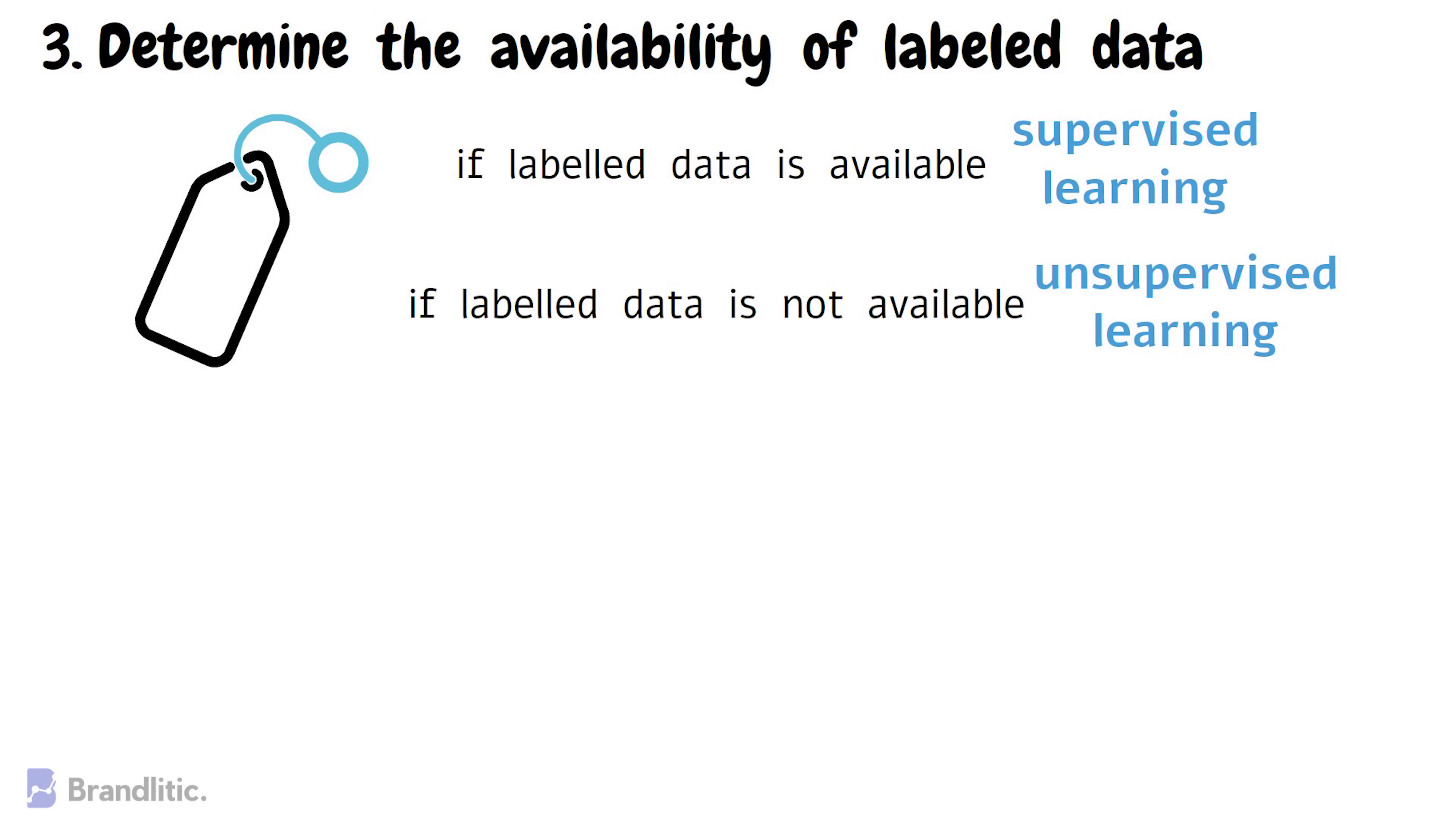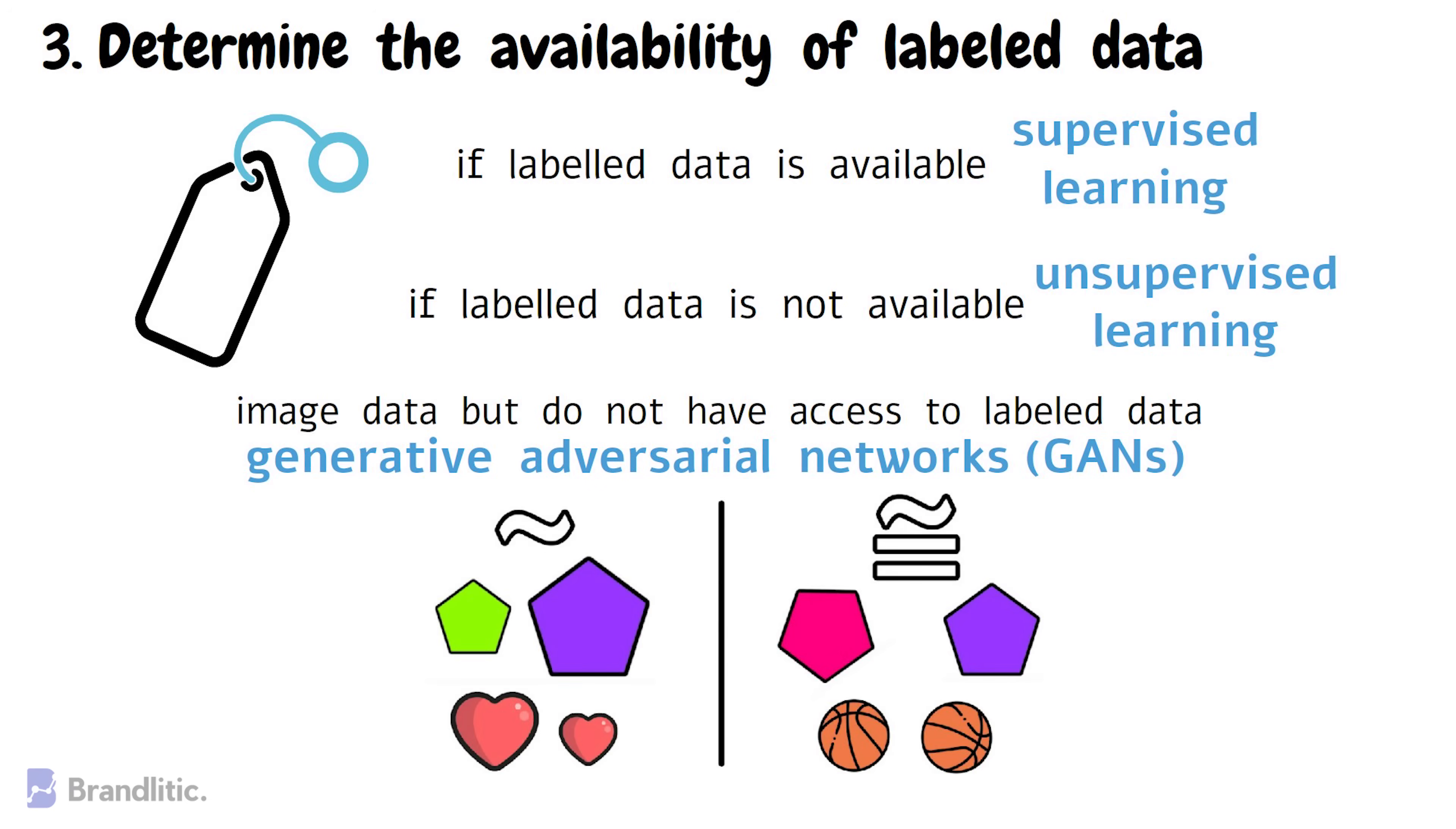For example, if you are working with image data but do not have access to labeled data, a generative adversarial network or GAN might be a good choice. GANs use unsupervised learning to generate new data that is similar to the training data.